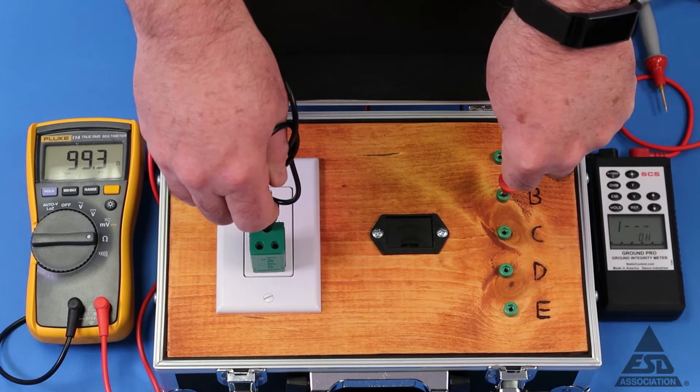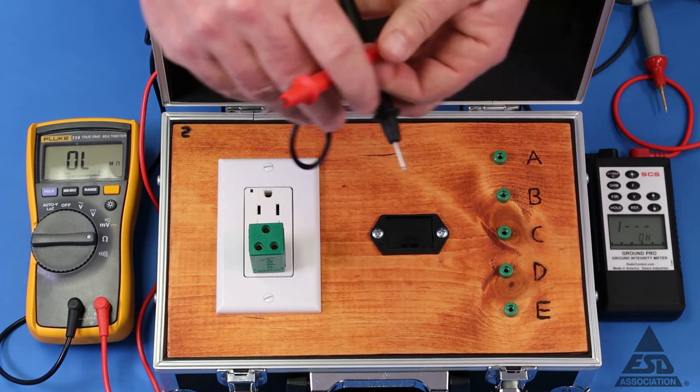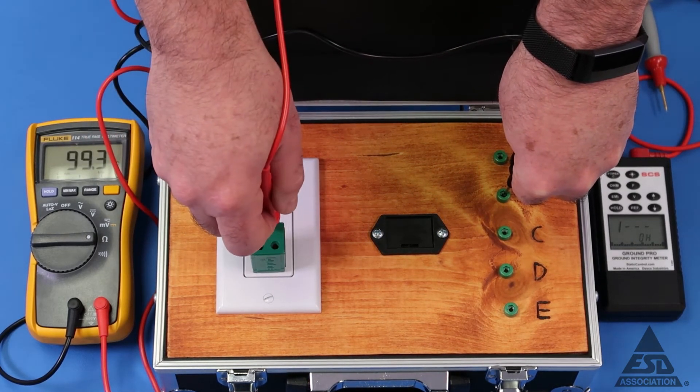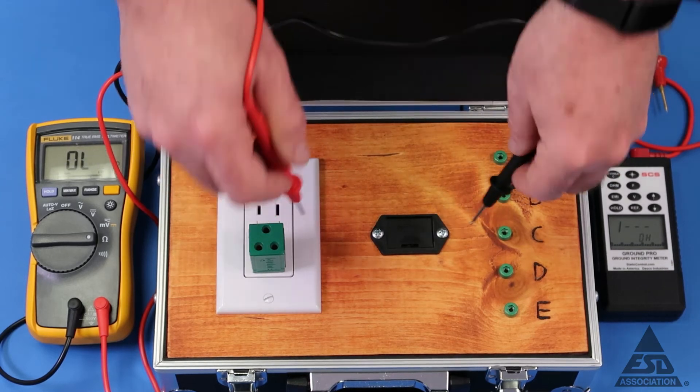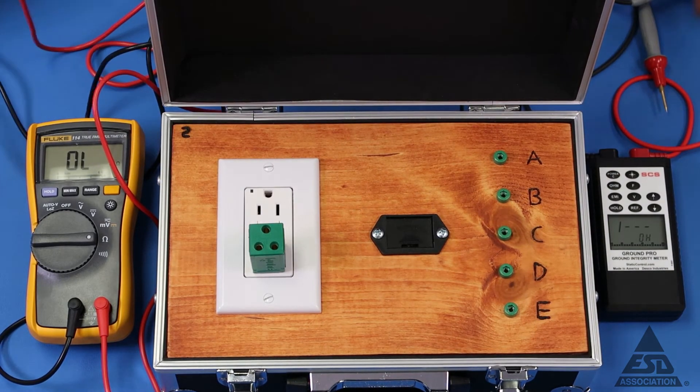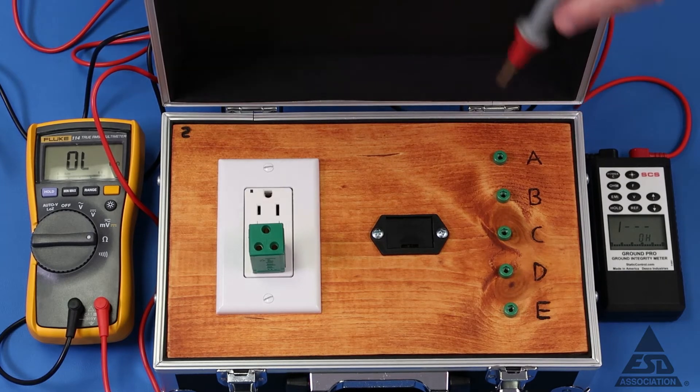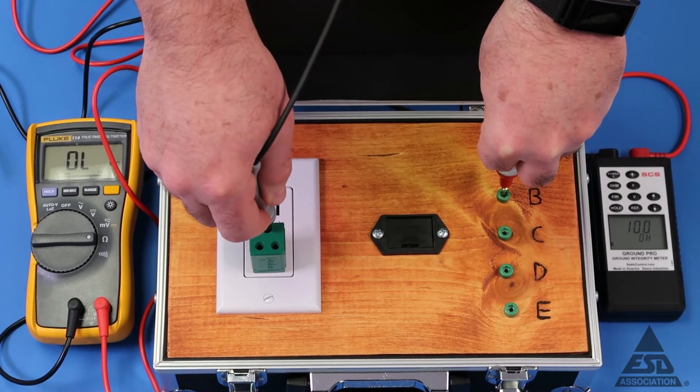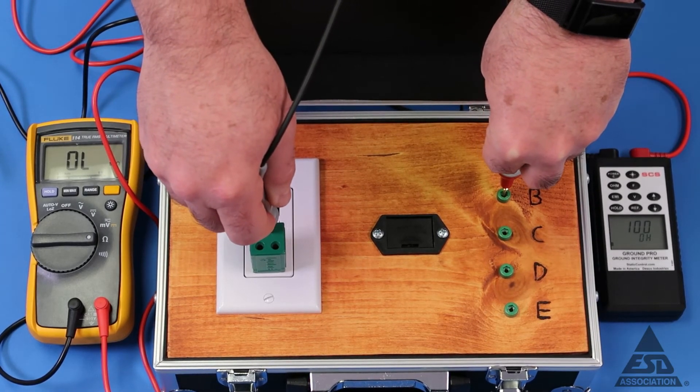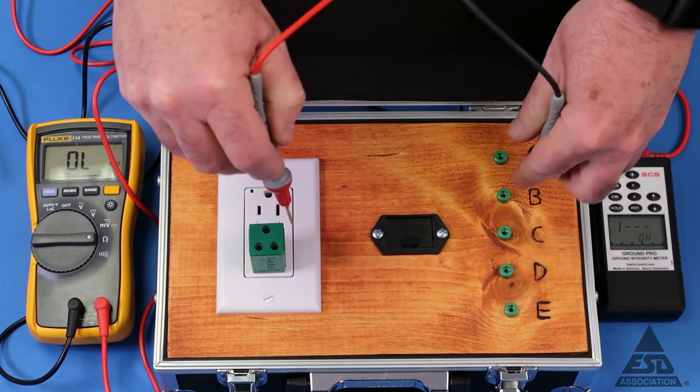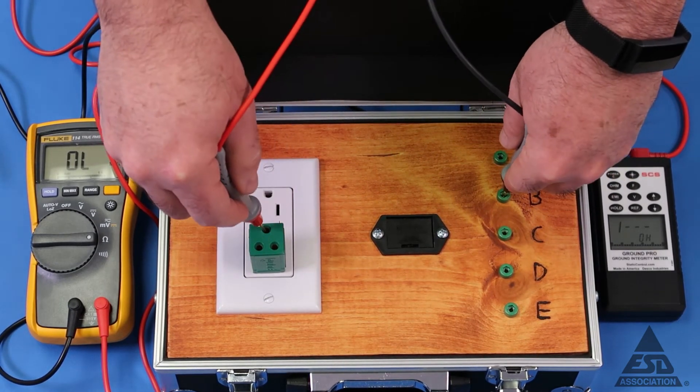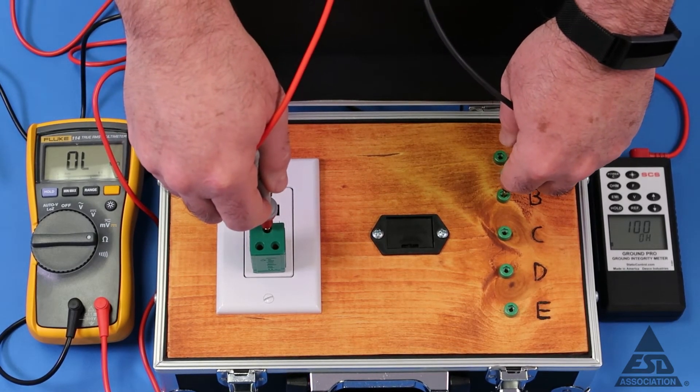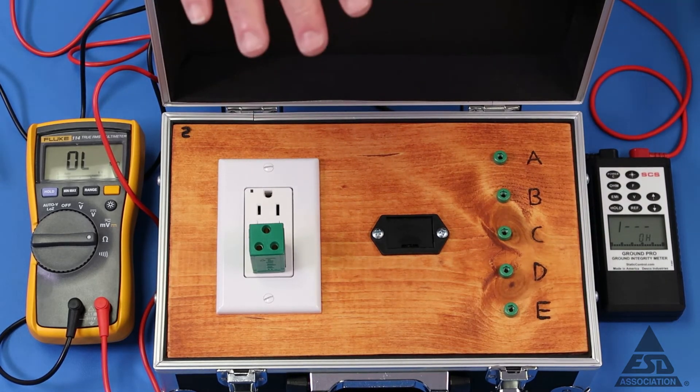And about 100 ohms. We'll just reverse it. Now we get the same measurement, about 100 ohms. Let's see what the impedance meter is giving us. And that's giving us 100 ohms also.